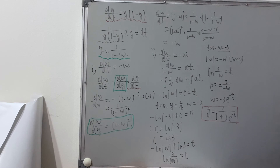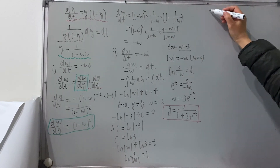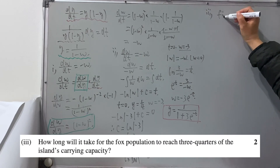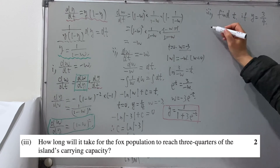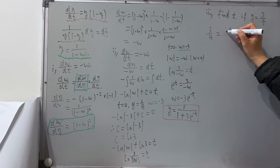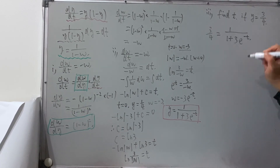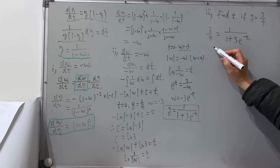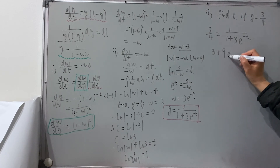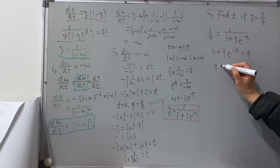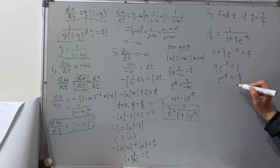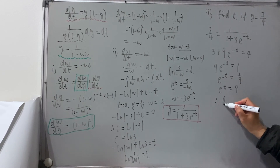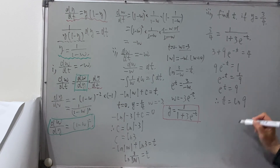Now the last part: find t when y equals 3/4. Substituting 3/4 into y equals 1 over (1 plus 3e to the negative t): 3/4 equals 1 over (1 plus 3e to the negative t). Simplifying gives 3 plus 9e to the negative t equals 4, so 9e to the negative t equals 1, e to the negative t equals 1/9, then e to the t equals 9, therefore t equals log 9. That's the final answer.